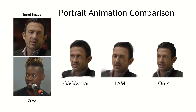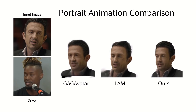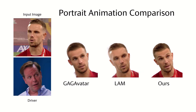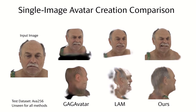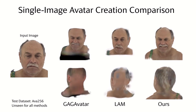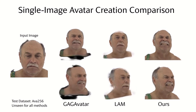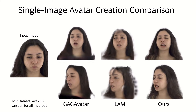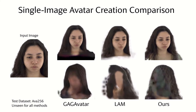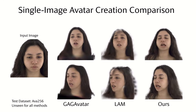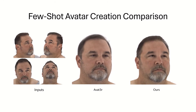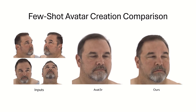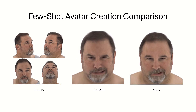We show comparisons on regular portrait reenactment, where the baselines perform well, but our method produces more expressive and more detailed animations. Next, we look at single-image avatar creation where free camera control is required: our method creates a complete 3D head avatar while baselines struggle with view extrapolation. Finally, we show a comparison in the few-shot setting, where our renderings are sharper and preserve the identity more accurately.